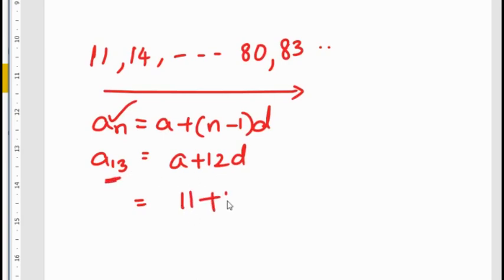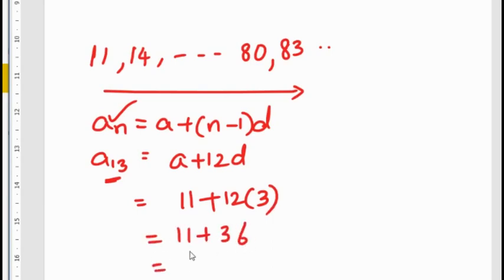Here A is 11 and D is clearly 3. So the 13th term is 11 plus 12 into 3, which is 11 plus 36, equal to 47. So the 13th term of this arithmetic progression from the end is 47.